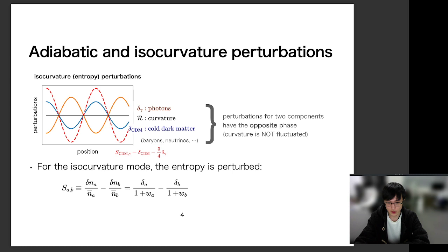So adiabatic perturbations can explain the CMB anisotropies very well. But theoretically, there can be another type of perturbation. And this is the isocurvature perturbations. For example, in the case of this picture, the cold dark matter, blue line, and the photons, orange line, are fluctuating with the opposite phases.